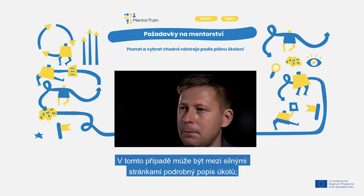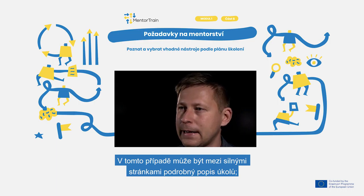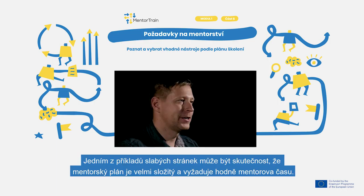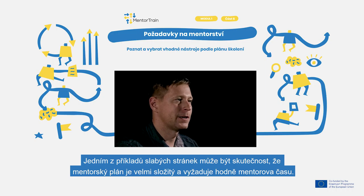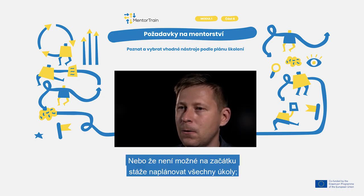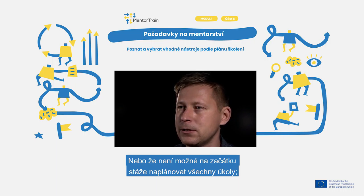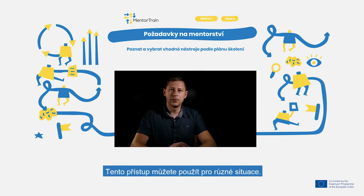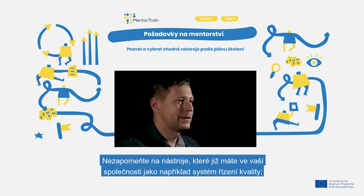In this example, a strength could be a detailed description of tasks. One example of a weakness could be that the mentoring plan is very complex and takes a lot of time for the mentor, or that it's not possible to plan all the tasks at the beginning of the apprenticeship. You can use this approach for different situations.